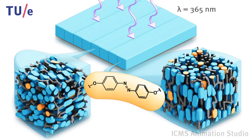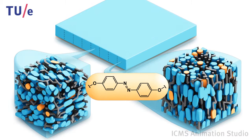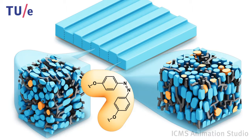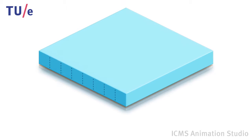One of the monomers in the mixture contains an azobenzene group that changes its shape when exposed to UV light. When the azobenzene changes its shape, the molecular order is disturbed. Upon removing the light source, the azobenzene is able to return to its original shape.